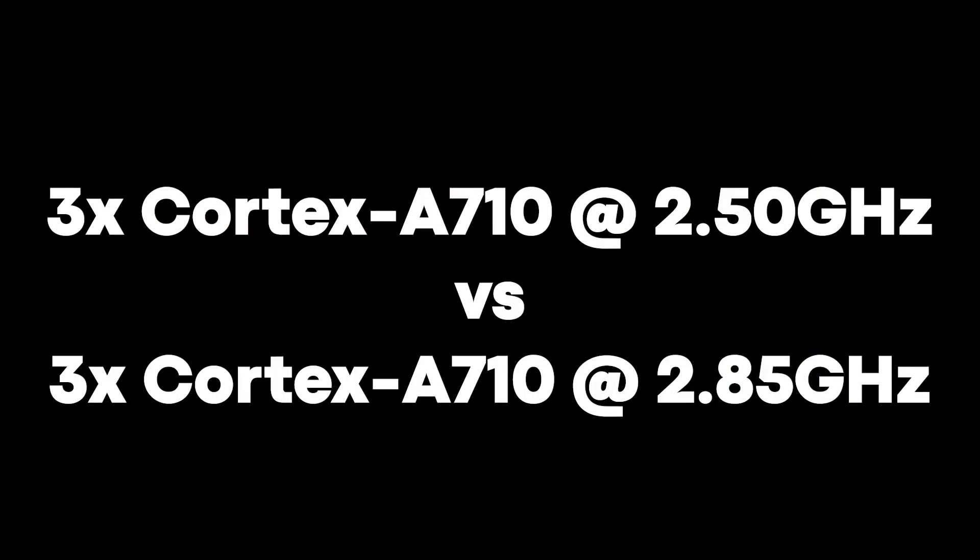The X2, A710, and A510 are the latest generation you can get from ARM. The big difference between the Snapdragon 8 Generation 1 and the Dimensity 9000 is clock speeds: the Dimensity 9000's X2 core is clocked at 3.05 GHz versus 3.0 GHz flat in the Snapdragon. The bigger gap is in the A710 cores — 2.85 GHz in the Dimensity 9000 versus 2.5 GHz in the Snapdragon — giving the Dimensity a clear edge in multi-core work.